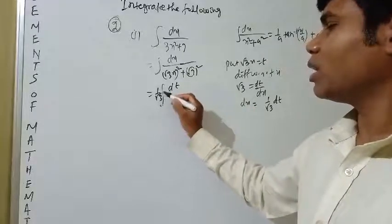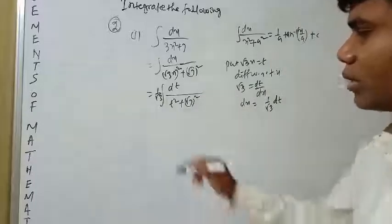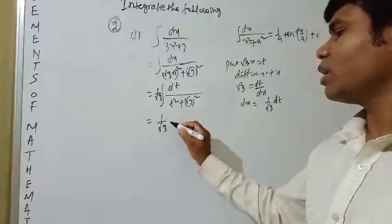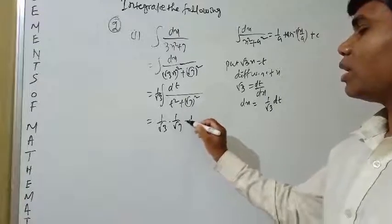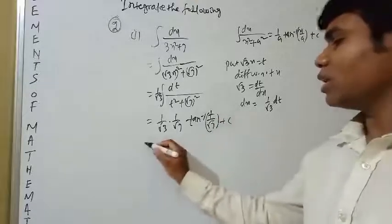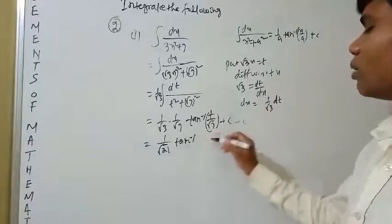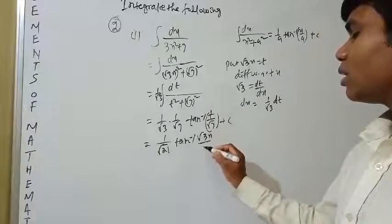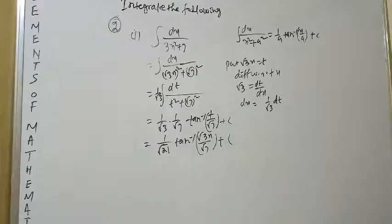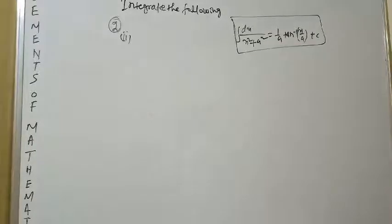Now substituting, dx = (1/√3) dt and this becomes ∫dt / (t² + (√7)²), where a = √7. Using the formula, we get (1/√3) × (1/√7) tan⁻¹(t/√7) + c = (1/√21) tan⁻¹(√3·x / √7) + c.